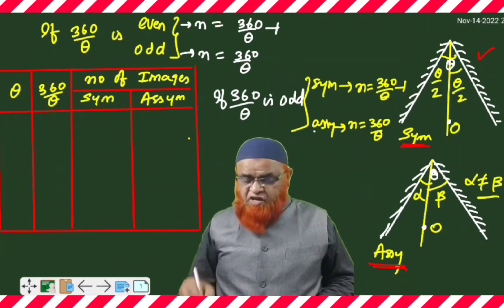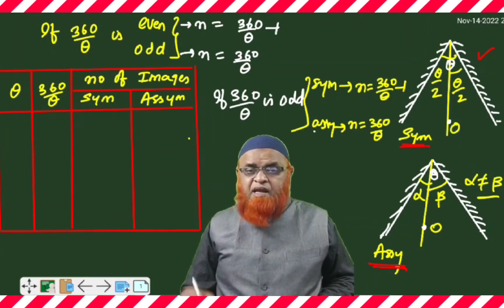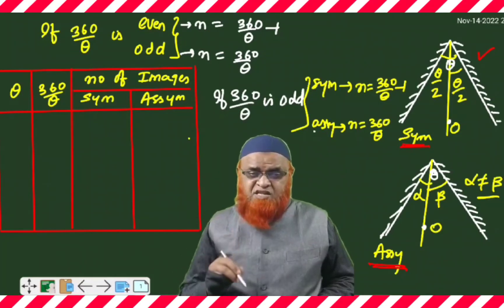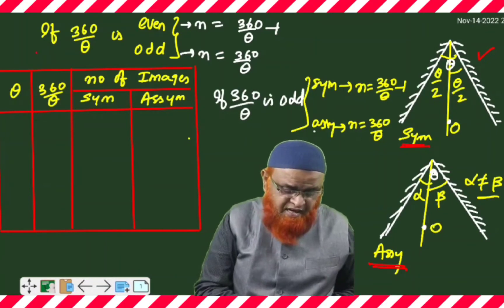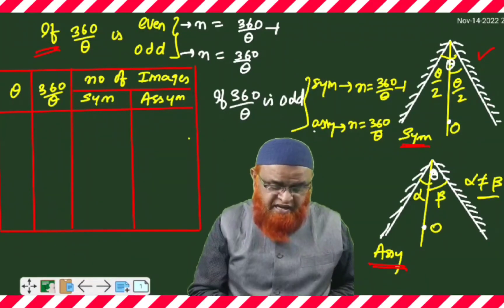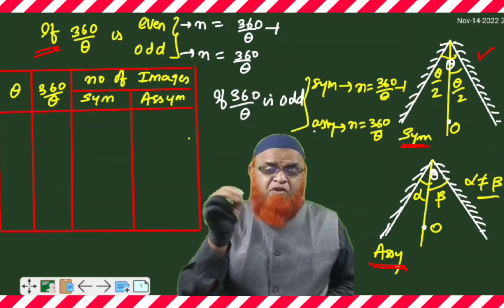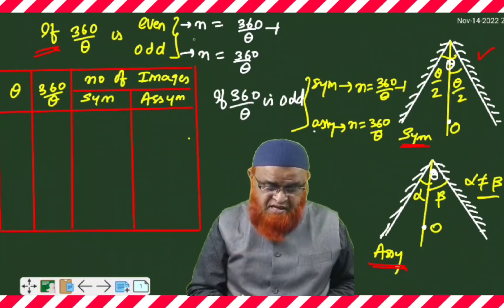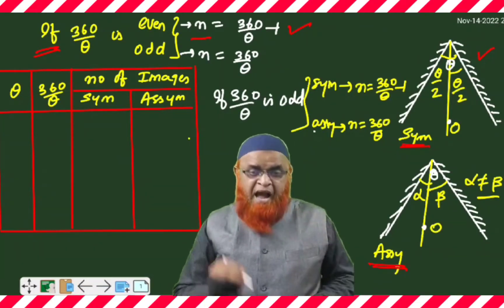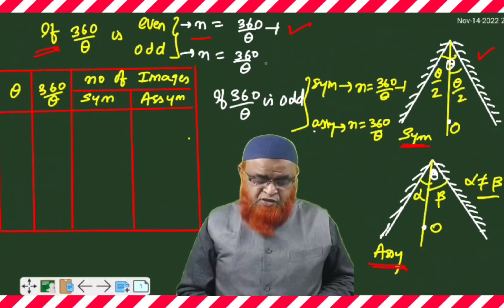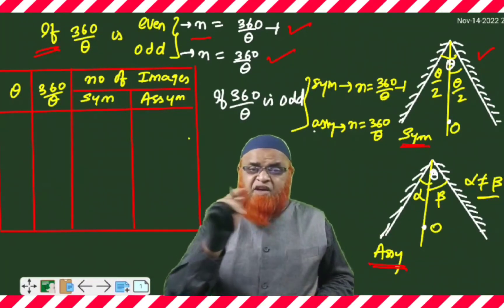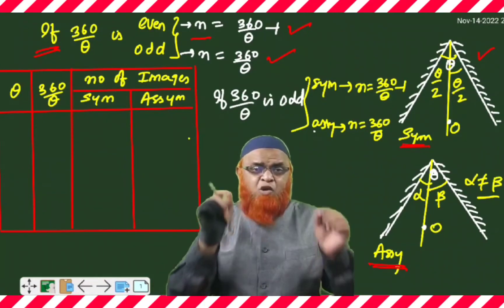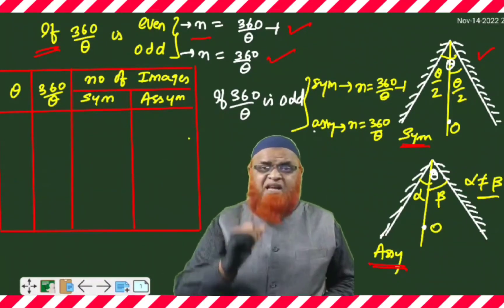If you keep an object exactly at the bisector, what are the conditions for odd and even? If 360 divided by theta is even, then the number of images formed is n = (360/θ) − 1. If it is odd, then n = 360/θ. That is your answer — if it is even you subtract one; if it is odd you keep it as it is.